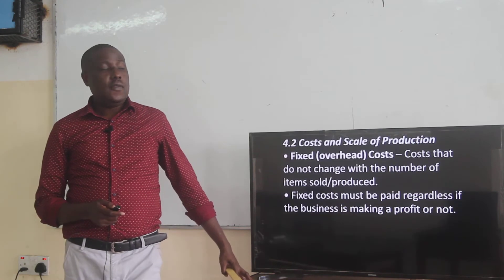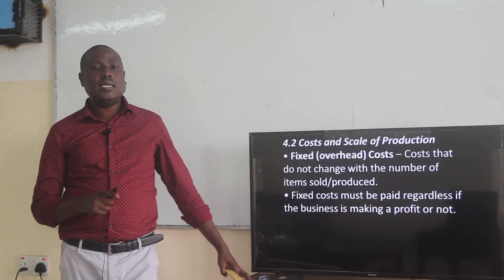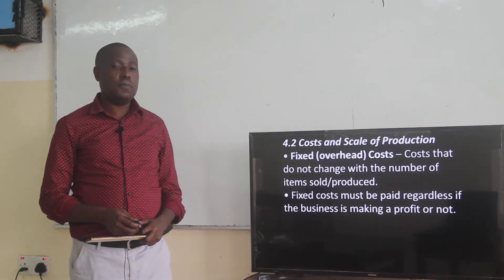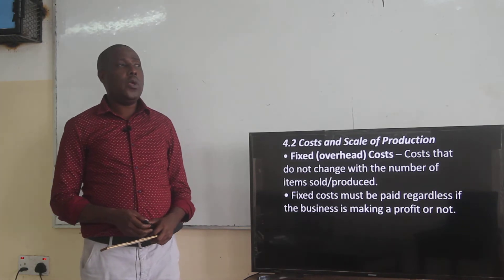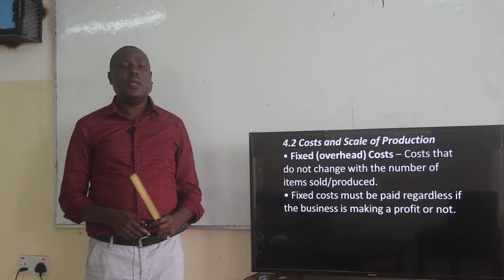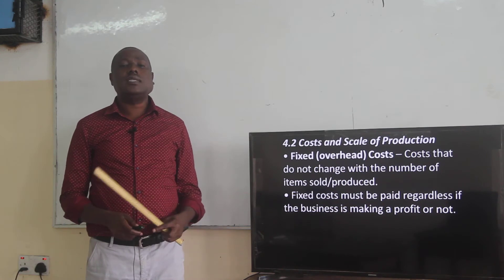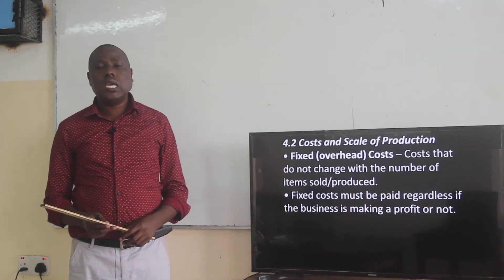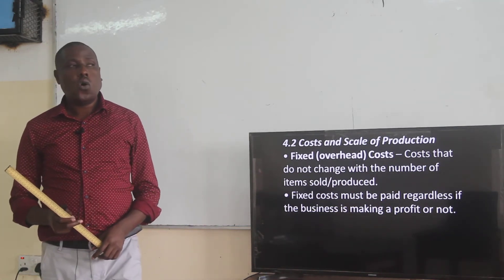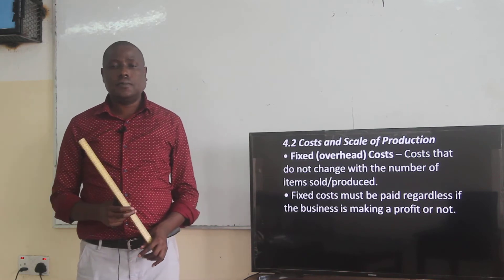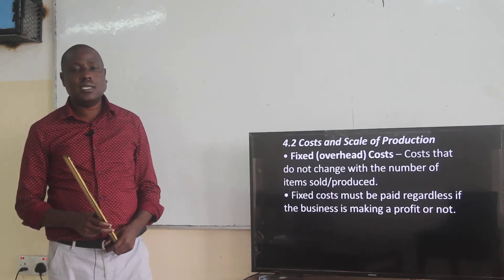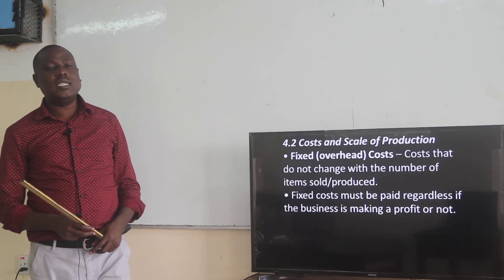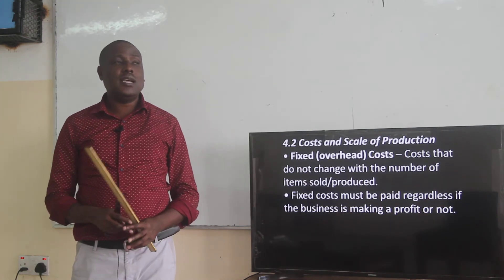We want to look at something very important, which is costs and scale. This is our unit core point. When we are producing, there are various costs that are involved. We have what we call fixed costs or overhead costs. These are costs that do not change with the number of items sold or produced.